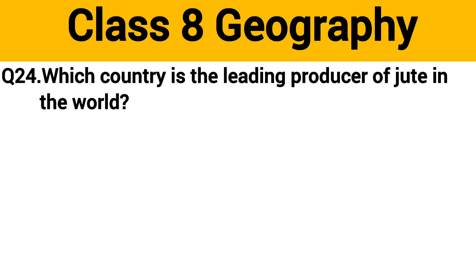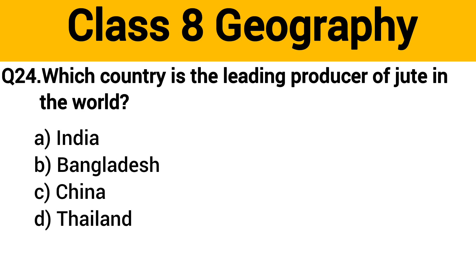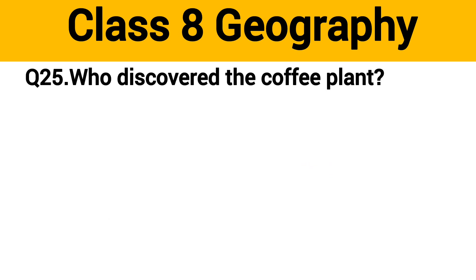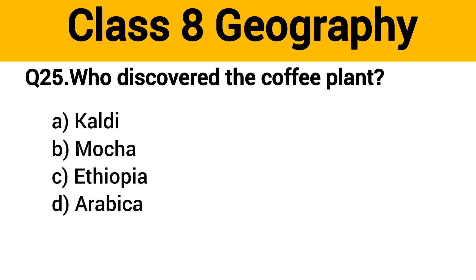Question number 24: Which country is the leading producer of jute in the world? The right answer is option A: India. Question number 25: Who discovered the coffee plant? The right answer is option A: Kaldi.